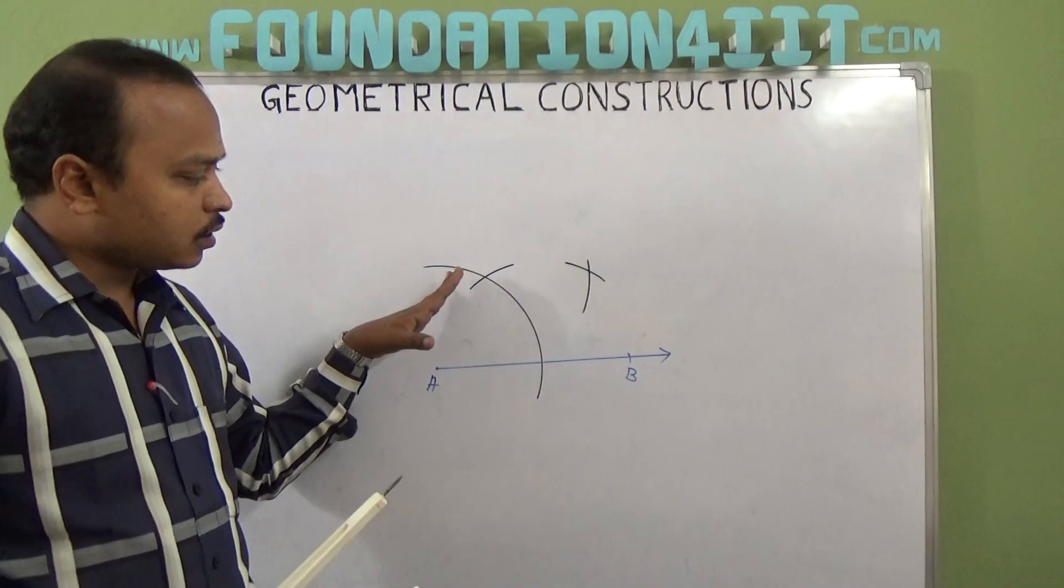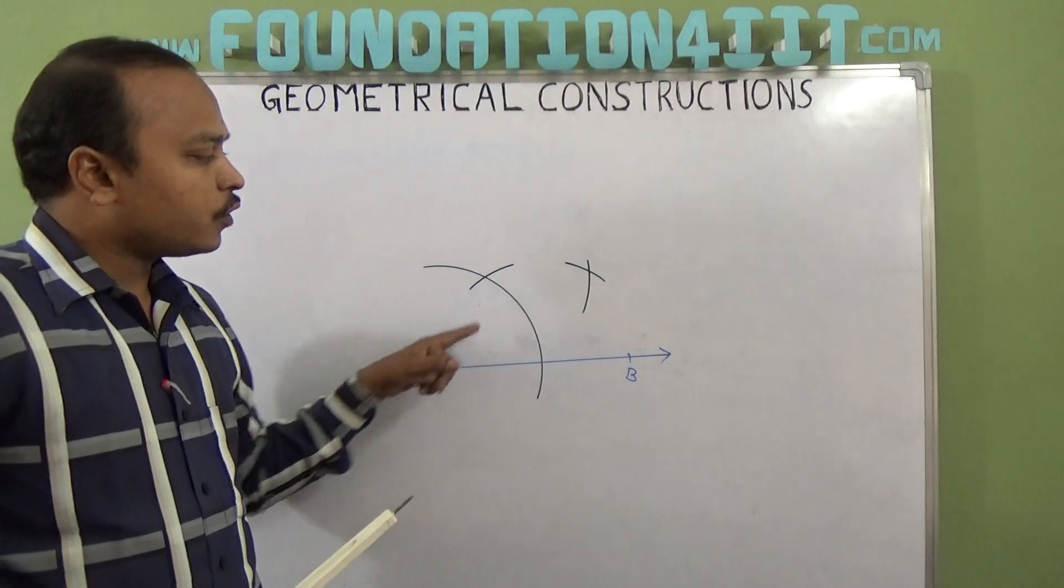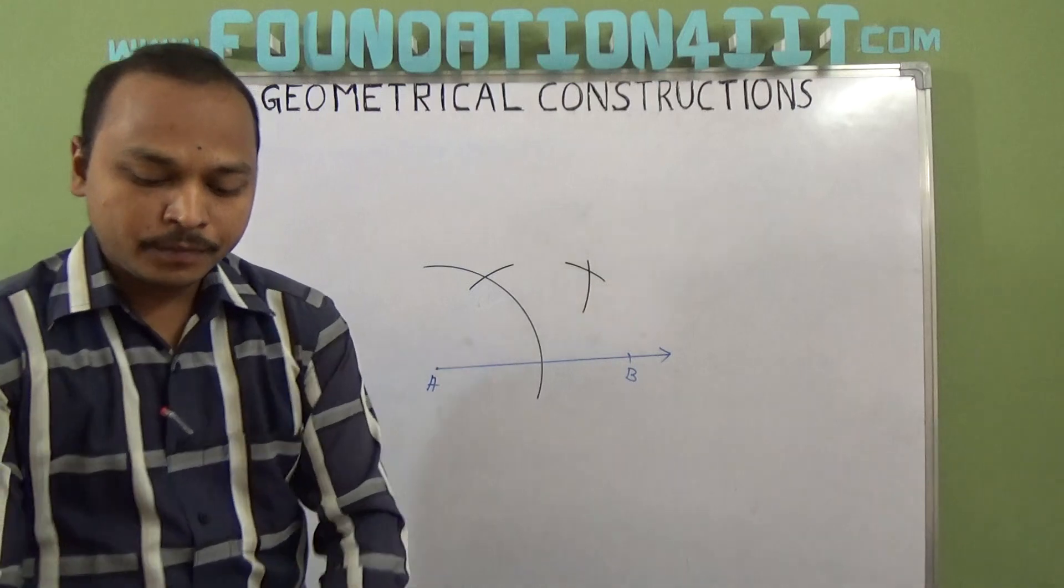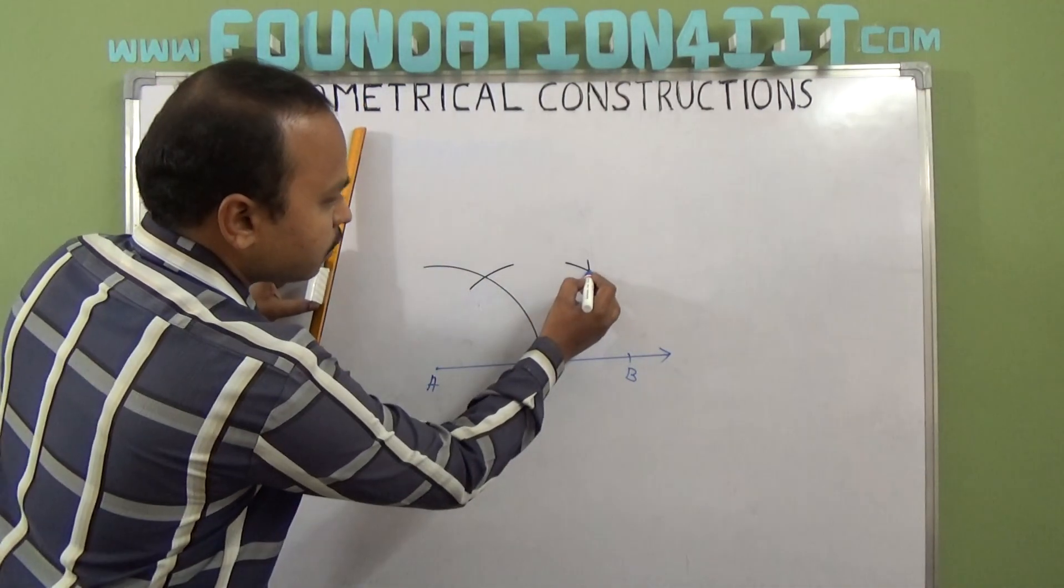That means this is 60 degrees mark and this is zero. Zero to 60, I have to bisect that. So 60 and zero, if you bisect it with two arcs that you join at one point. Now those two points you join to the center and this is 30 degrees.